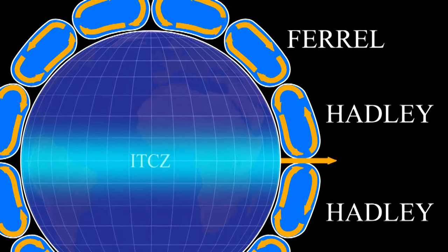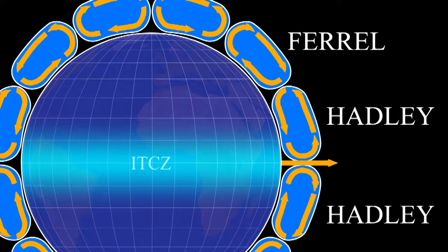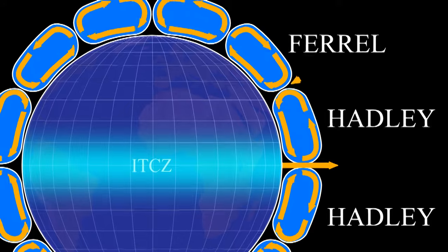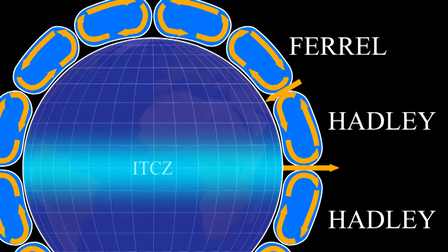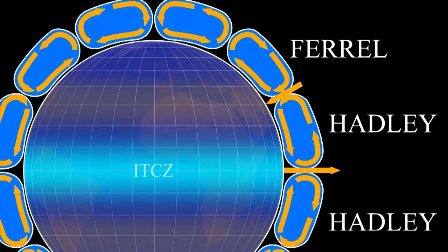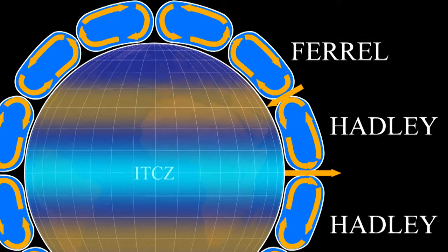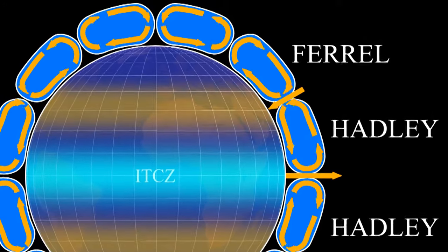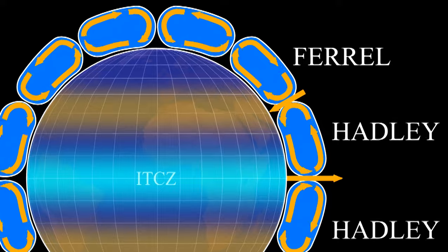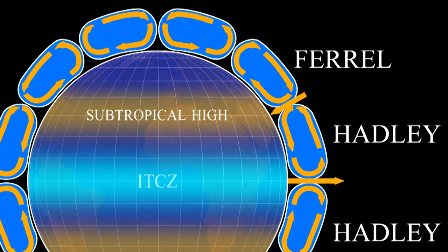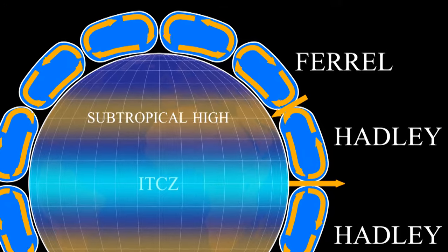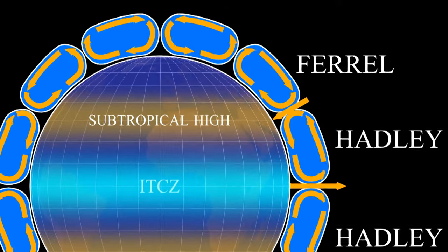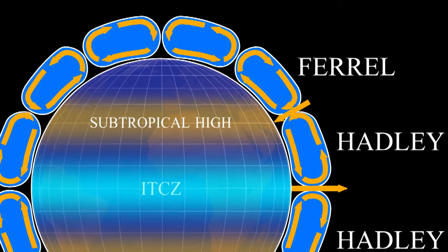Between the Hadley and Ferrell cells, the air is falling. When air is falling, we have dry air and high pressure. This is called the subtropical high, and it's where we have many of the world's deserts.